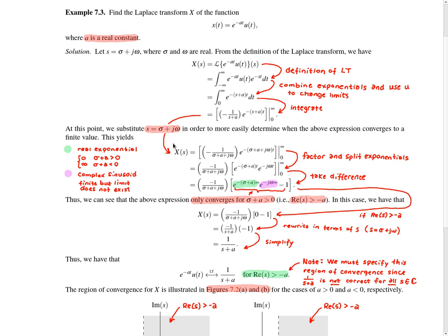Performing this substitution we obtain the next line. We can then split this exponential into a real exponential and a complex sinusoid, and take the difference, which gives us the next line. At this point we need to be somewhat careful about how we simplify.